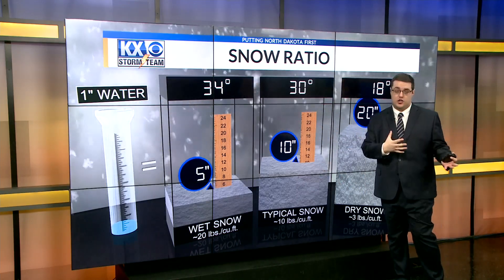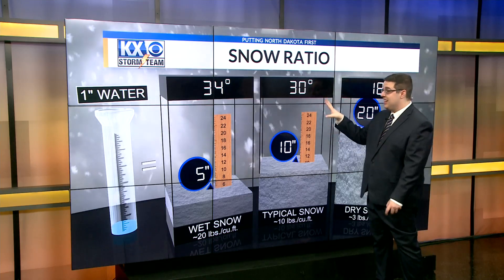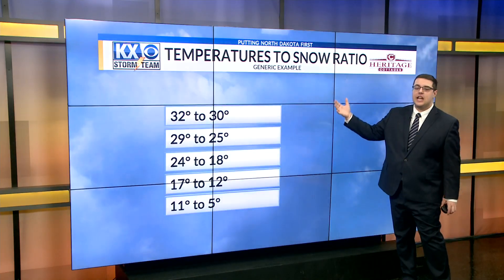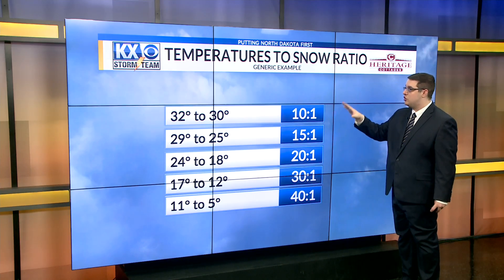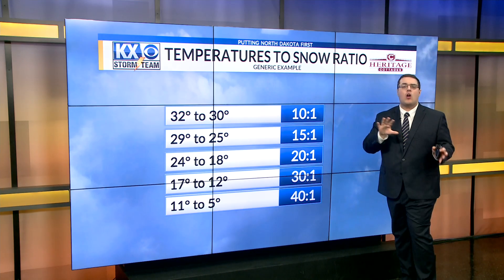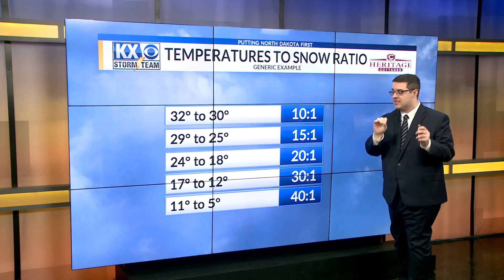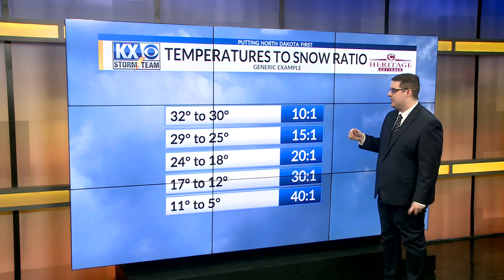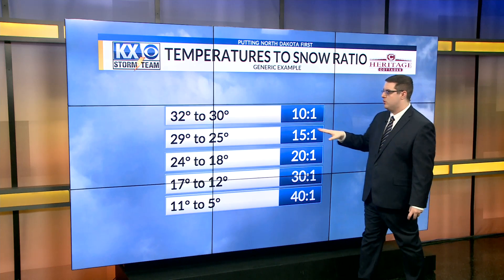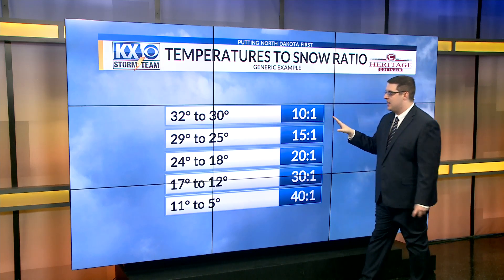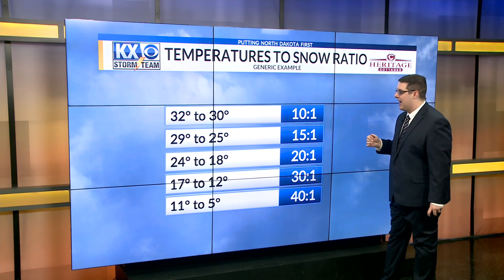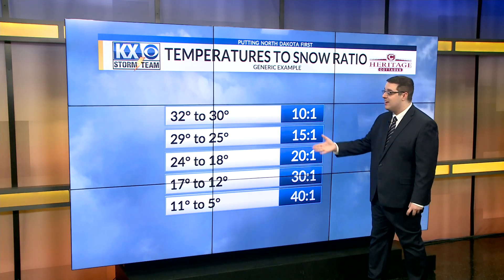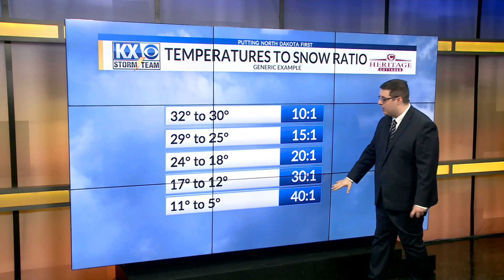We obviously had some wetter snow over the last couple of days with our temperatures sitting in the upper twenties and lower thirties. Here's a look at generic examples of temperature ranges to snow ratios. Around 32 to 30 degrees you're at a 10 to one to 12 to one ratio; 29 to 25 degrees, 15 to one; 24 to 18 degrees, 20 to one; 17 to 20 degrees, 30 to one; and 11 to five degrees getting down there at 40 to one.